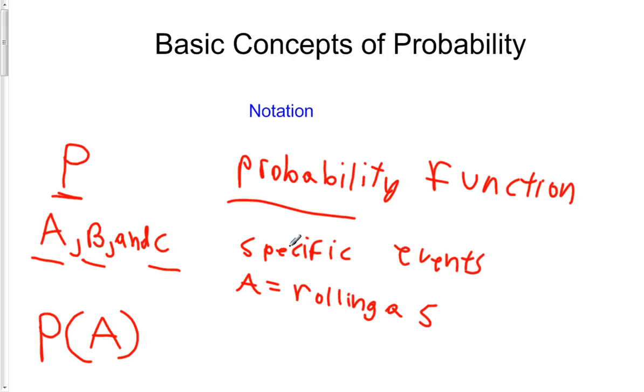So this is the notation that we're going to be using. This is a probability function. This is the probability of event A or the probability of rolling a 5, of rolling a five in our example. So this is the probability of event A. And that's the notation that we're going to need for now.